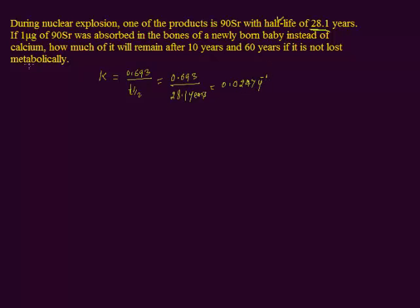The question says: if one microgram of strontium-90 was absorbed in the bones of a newly born baby instead of calcium, how much will remain after 10 years? The initial amount is 1 microgram, the time is 10 years, k is known, and the final amount is unknown. Let's apply the formula for the first-order rate equation.